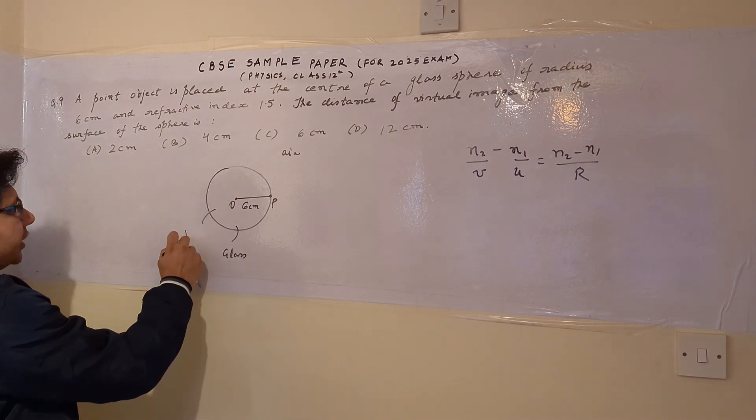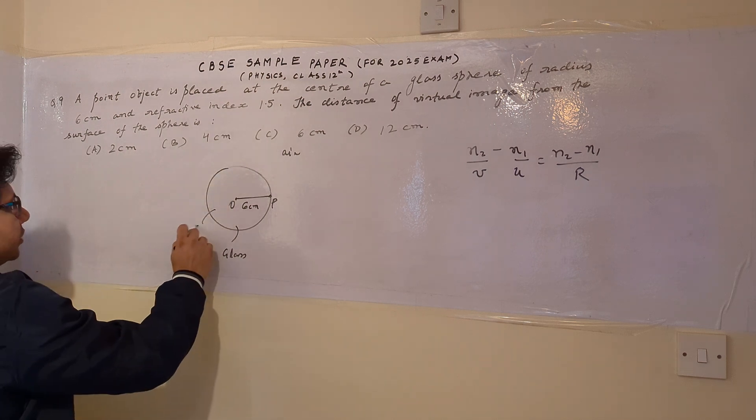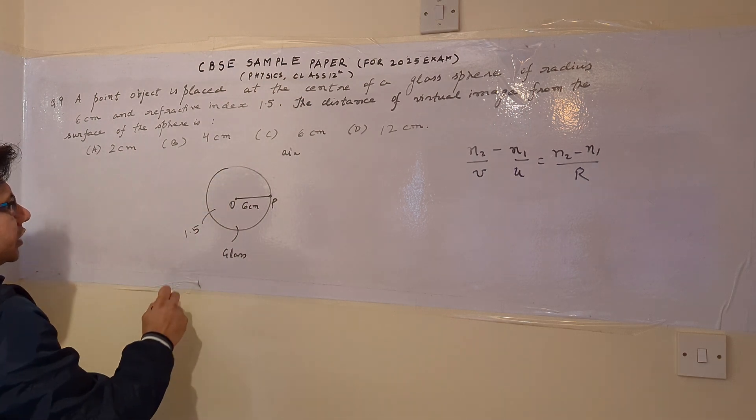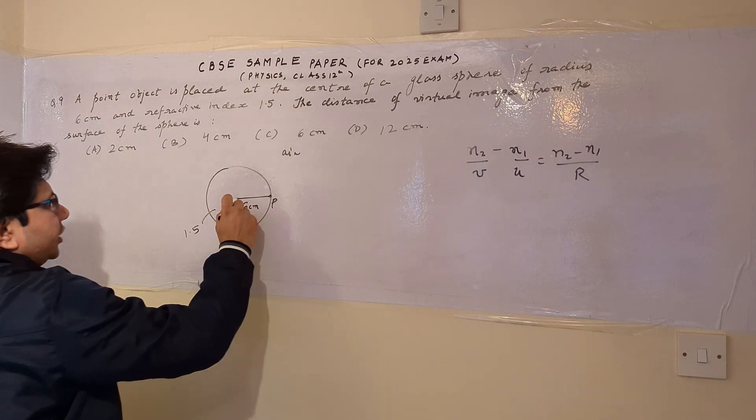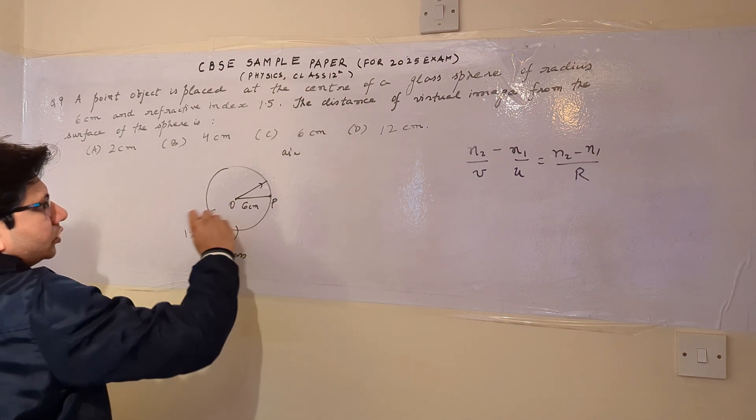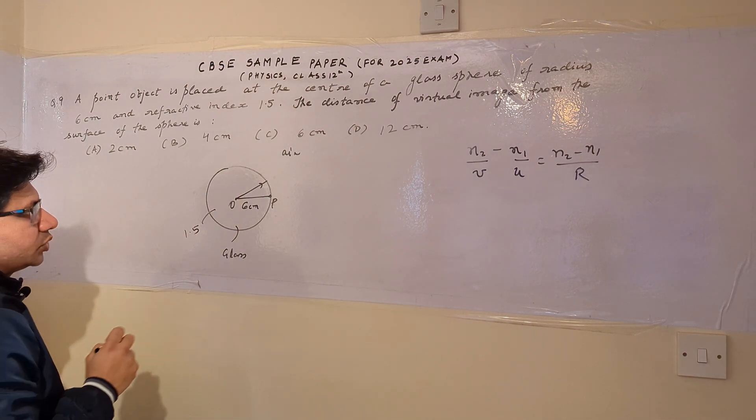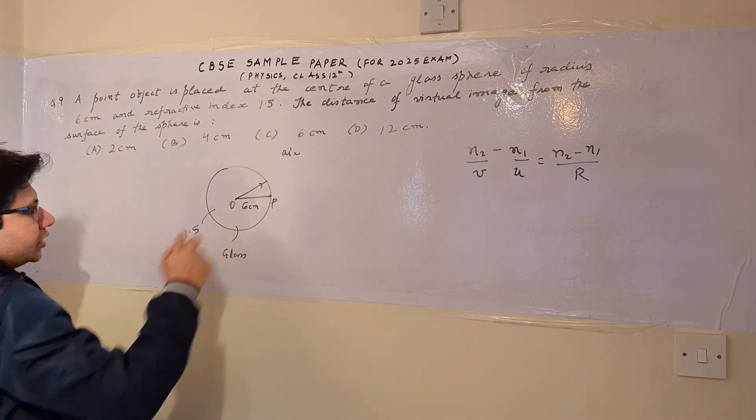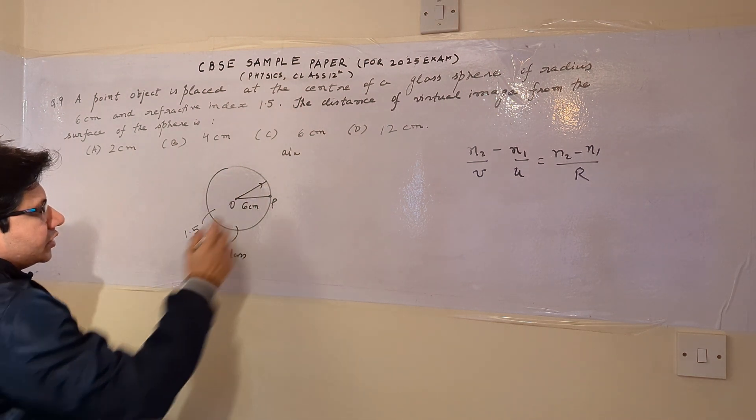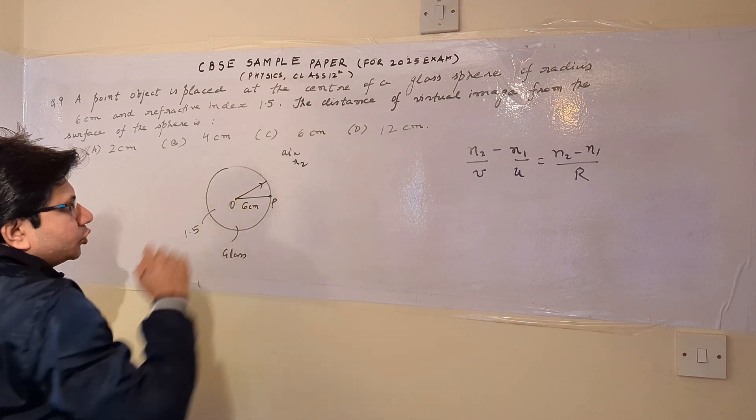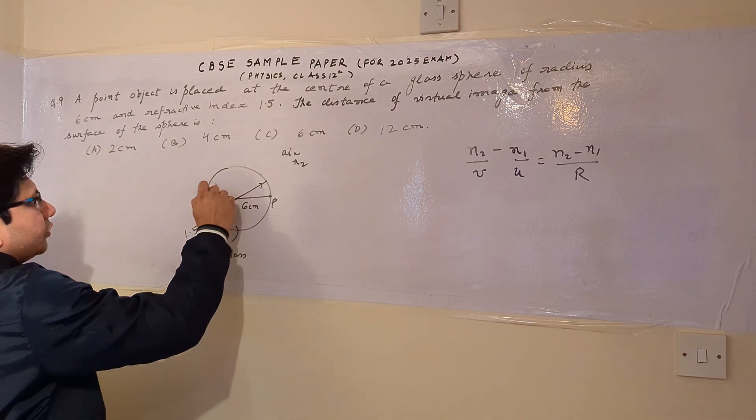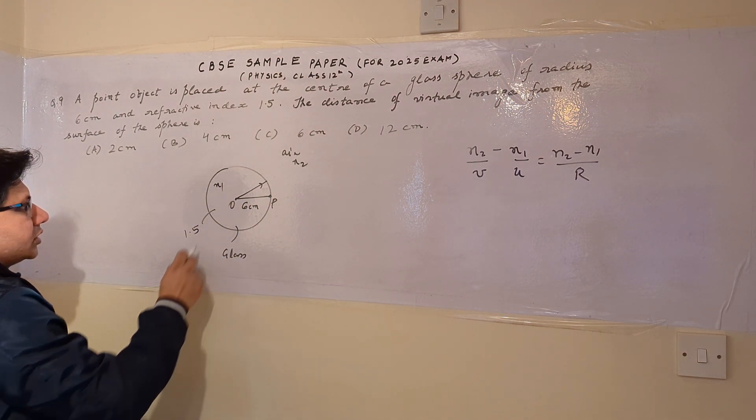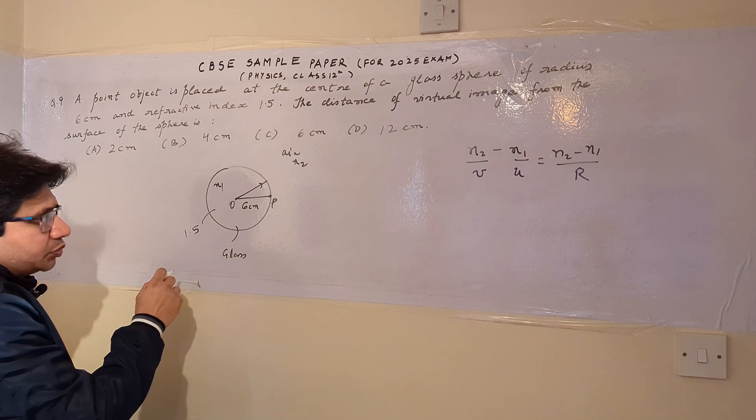We know that the refractive index, which is also given here, is 1.5. So the ray goes from the object towards this side and goes into the air. And this interface is a glass-air interface. Now for this interface, air refractive index is N2, and the refractive index of the glass is N1 in this case.